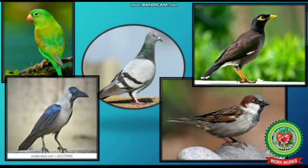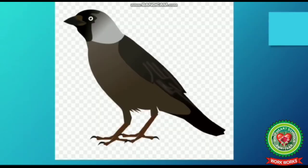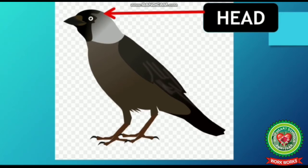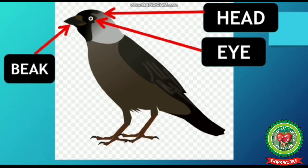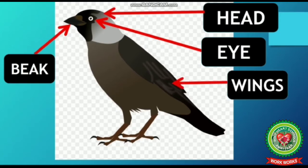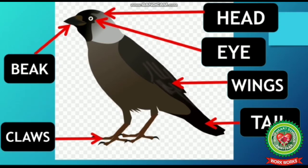Now look at the picture of a bird given below and write the names of its body parts in the blank boxes. Number one is head, number two is eye, number three is beak, number four is wings, number five is tail, and the last is claws. These are the various body parts of a bird's body.